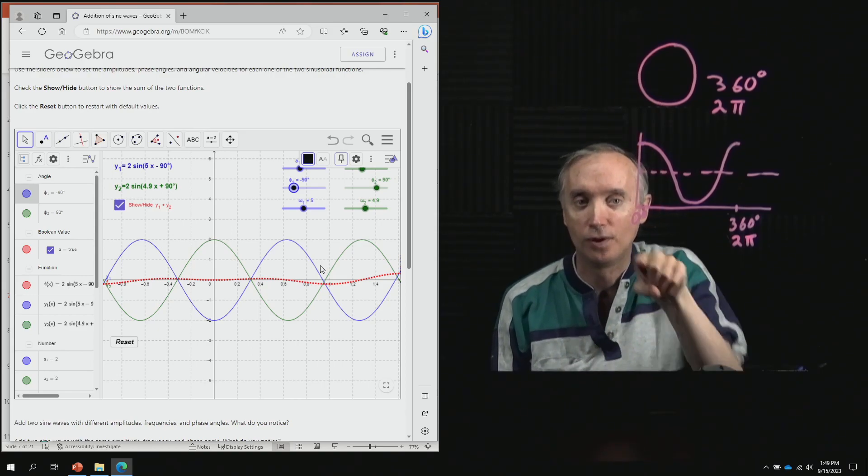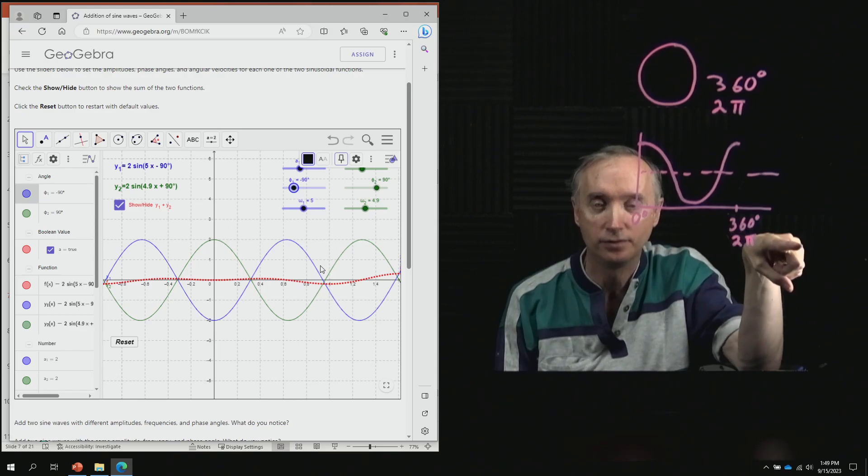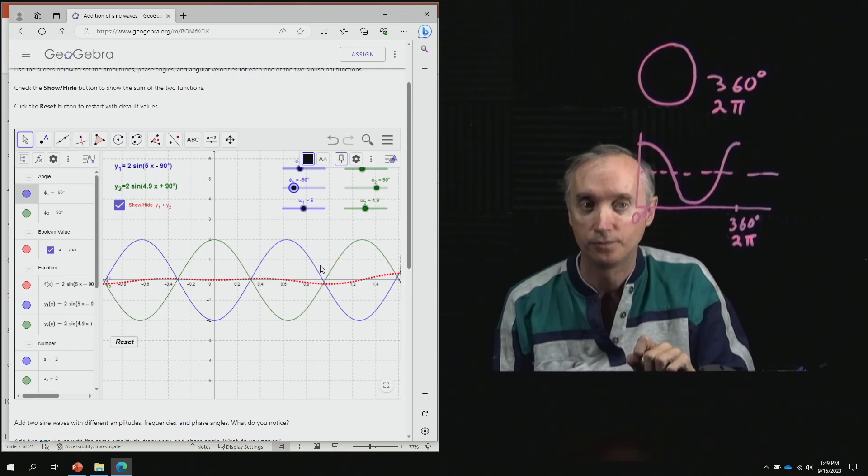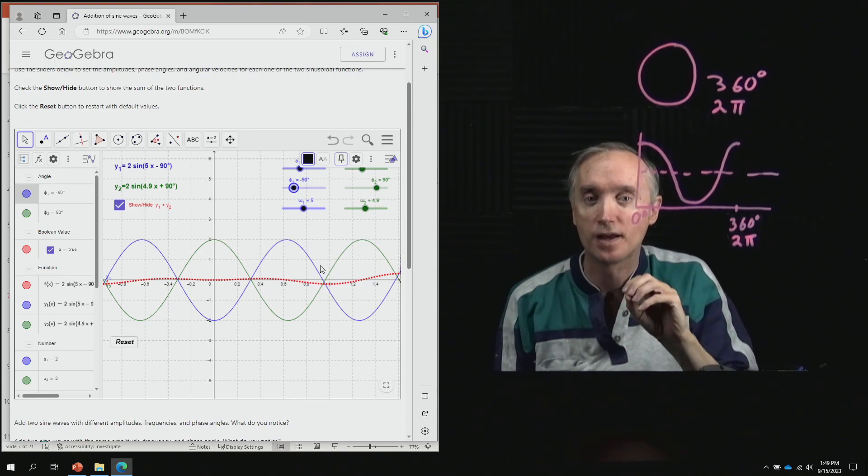So you can get it to where it's exactly a straight red line, meaning it has no amplitude. All right, so that's going to be destructive interference.